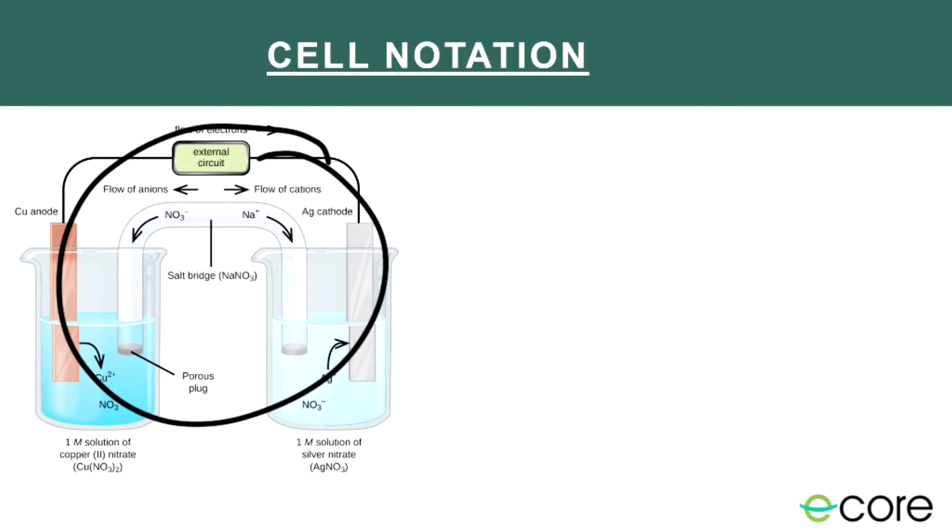This is a lot to write. So we want some shorthand way to indicate what cell we have. How does that work? Well, we always start on the anode, and then we proceed left to right. So on the anode, the very first thing we see is copper metal. And so that's what we're going to write first in our cell notation. Then we're going to exit that anode, and we're going to cross into a solution. Whenever we cross into a new phase, we're going to put a vertical line. So we'll put a vertical line, and what do we cross into? Well, we cross into copper nitrate. Remember, I said very often the ions are counterbalanced by nitrate, and that's the case here. So we have copper nitrate, and I should also put the concentration. That's an important piece of information about what's in that cell. So I'm going to put 1 molar copper nitrate.